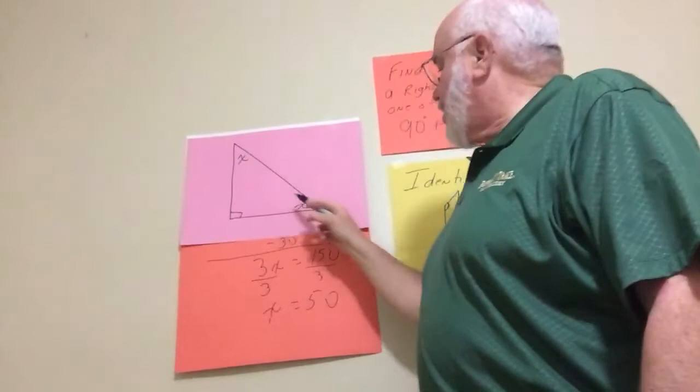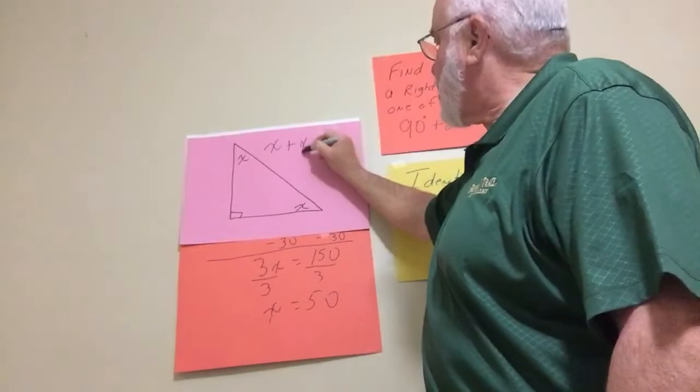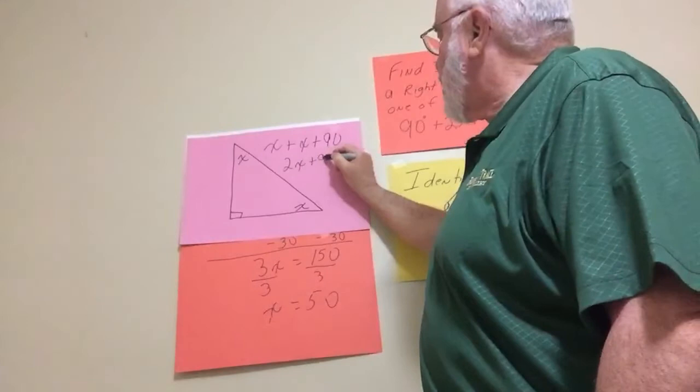x plus x plus 90. So it would be 2x plus 90.